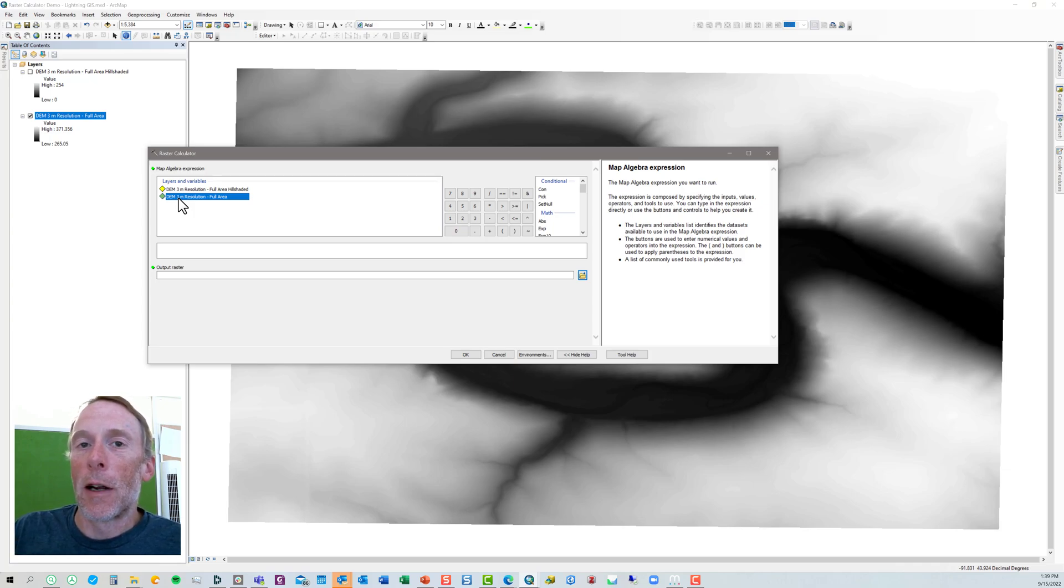The best way to make sure that you create an expression that's proper syntax and will function is to try never to type directly into the expression box. So instead of typing I'm just going to double click on this raster because what I want to do is take this raster, then I'm going to click on the multiply sign over here and I want to multiply it by 3.281. So you can see that's created the expression for me, our raster DEM times 3.281. So it's going to take each cell in the raster, multiply the raster value by 3.281.